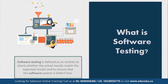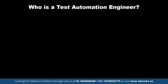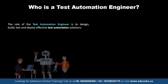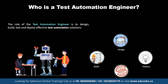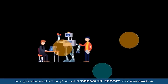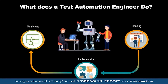Now that you know what Software Testing is, let's see who is a Test Automation Engineer. The role of the Test Automation Engineer is to design, build, test and deploy effective test automation solutions. To fulfill this role, the Automation Engineer applies appropriate automation technologies to meet the short and long term goals of the testing organization. An Automation Engineer basically utilizes technology to improve, streamline and automate a manufacturing process, and is responsible for planning, implementation and monitoring of such technology.